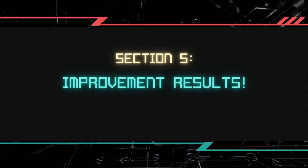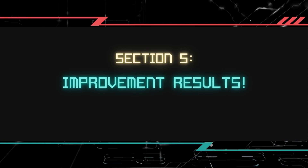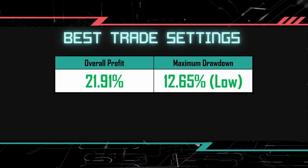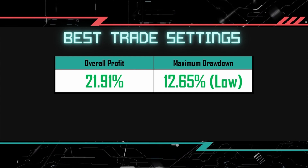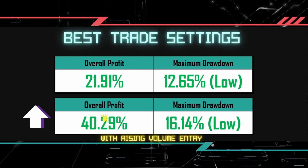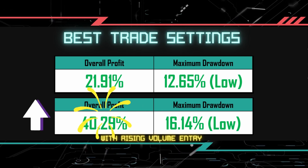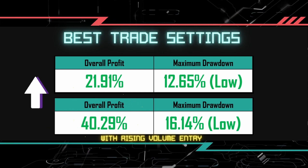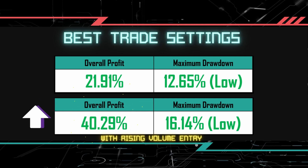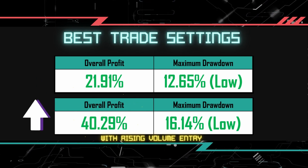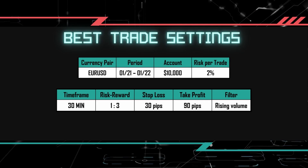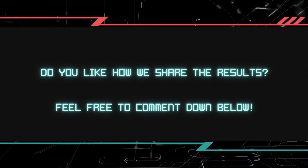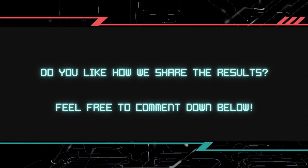Now let us move on to the most important question of the video: how profitable is this strategy with our improvements, and what settings should we use? Over here we have the previous best result from backtesting the strategy in 2021. After using the rising volume filter, we are able to get an improved result. Overall, the improved strategy entry has a total of 40.29% increase in the account balance and a drawdown of 16.14%. This is definitely an improvement compared to the previous result. To achieve this, we enabled the rising volume filter and used the following settings. Please feel free to comment down below if you have any suggestions on how we can improve.